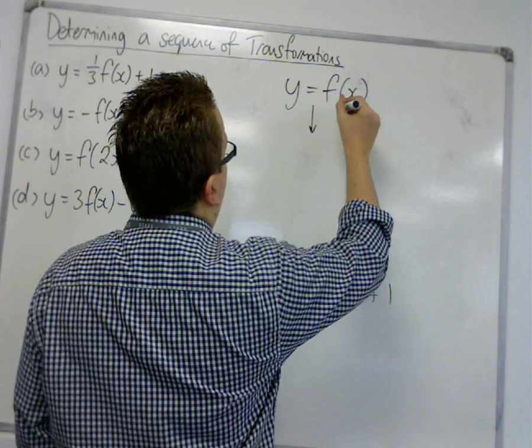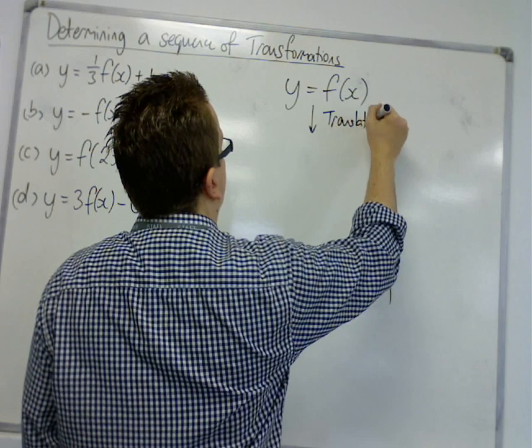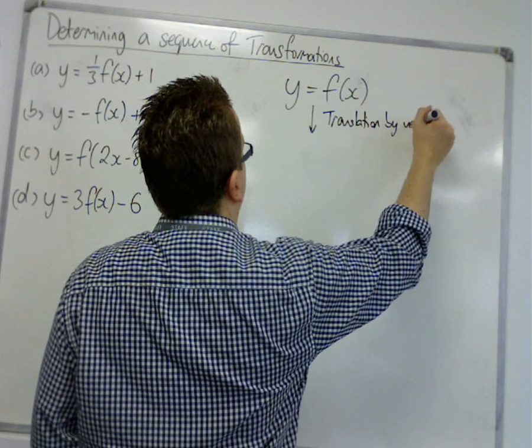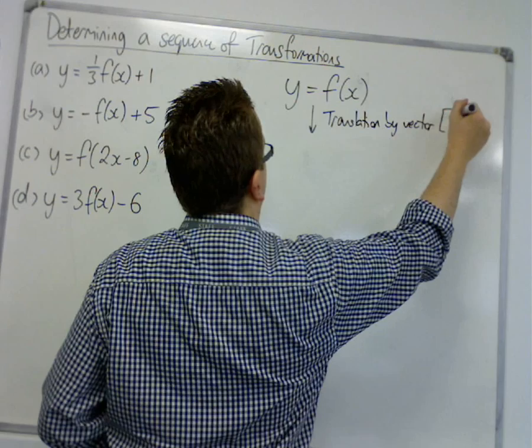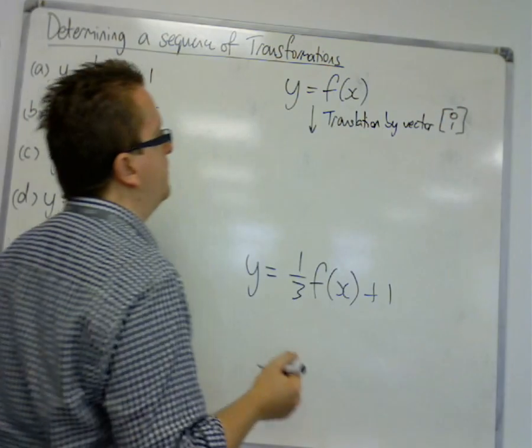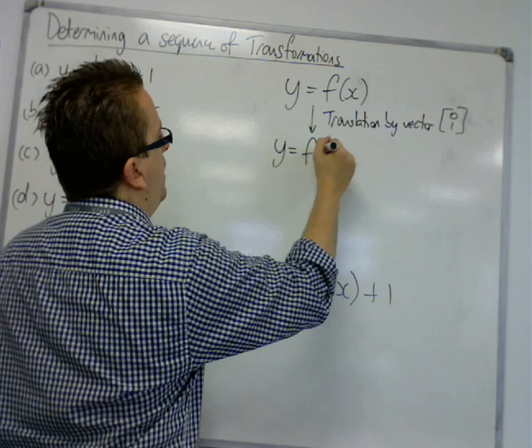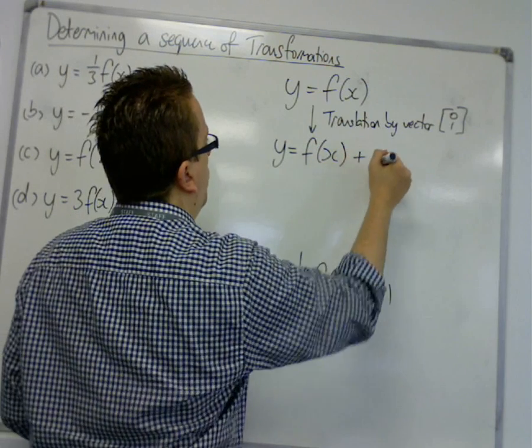Let's do that translation first. So, translation by vector 0, 1. Now, that would get us y is equal to f of x plus one.